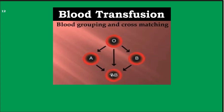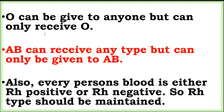AB blood group is the universal recipient. However, the Rh factor must also be considered. People with Rh-positive blood can receive from both Rh-positive and Rh-negative donors. But people with Rh-negative blood can only receive from Rh-negative blood.